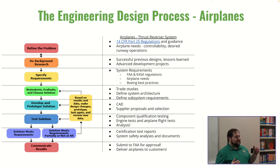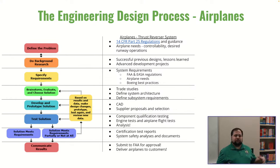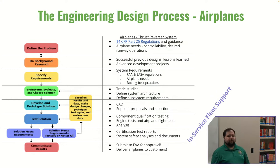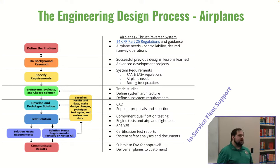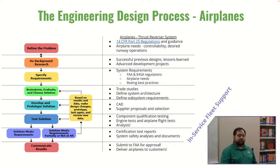Once we get approval that the designed airplane meets all requirements — both Boeing's requirements for how it needs to operate for customers and the regulatory requirements for safety — we deliver the airplanes to customers. It's the exact same process with different technical details. After the airplanes are out flying, we sometimes find issues — safety issues or economic issues where parts wear out faster than intended — and have to do redesigns or come up with new solutions when the original design was a little lacking.